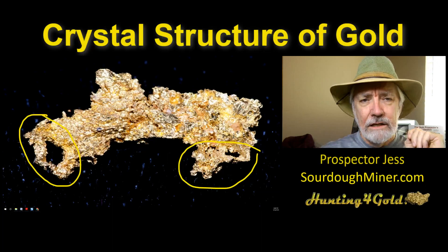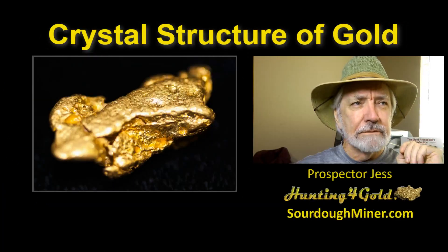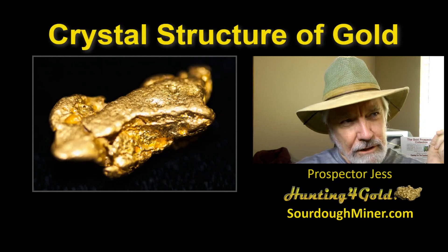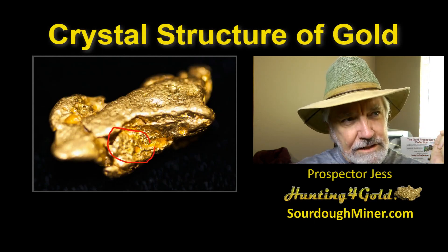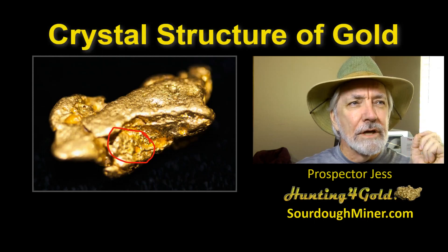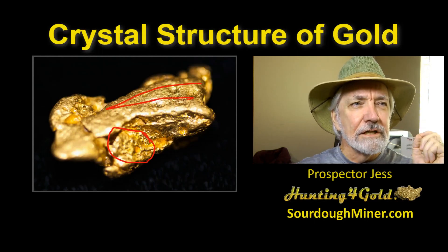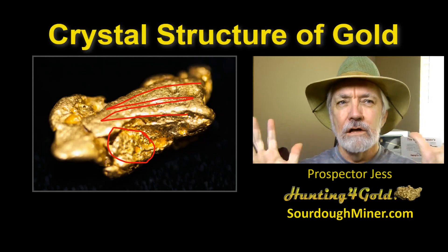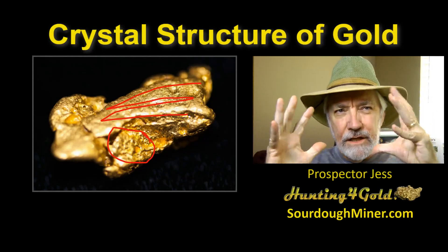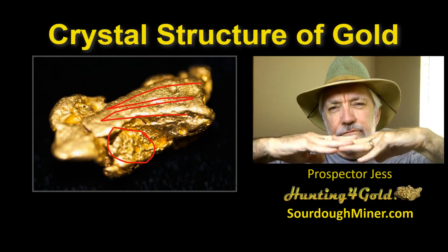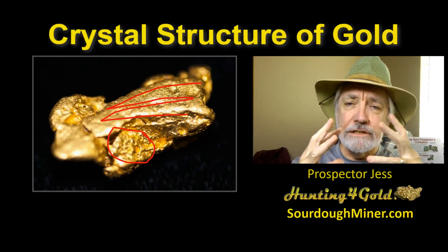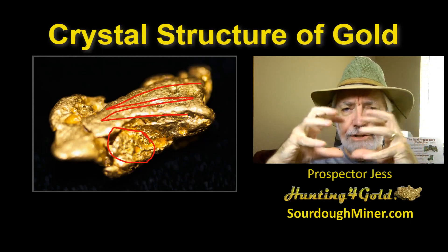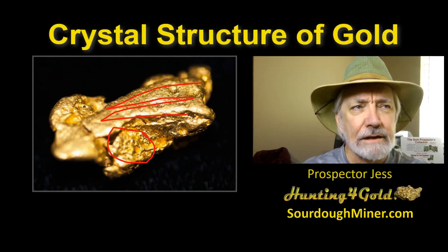Now compare that to this one. This is a nugget that obviously came from crystalline gold. If you look inside this area right in here, you'll see a little bit of that same kind of crystal structure. But along this surface it's getting completely worn down - there's no more crystal structure apparent. All that gold foil and everything gets pounded and pushed flush. Because gold is so malleable, if you pound it hard enough you can actually get it to weld back together into one mass of metal.